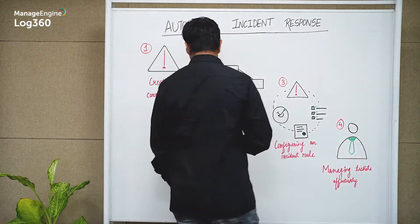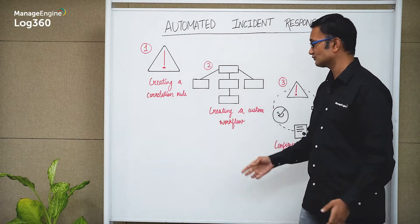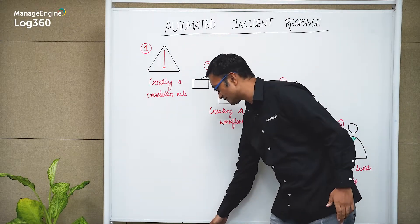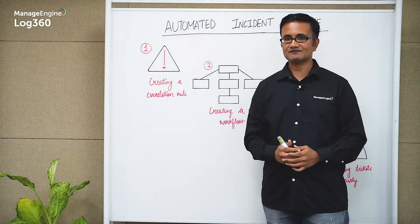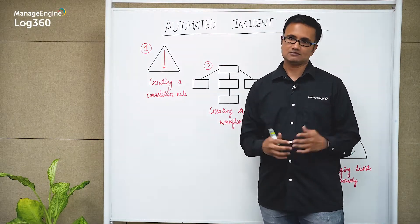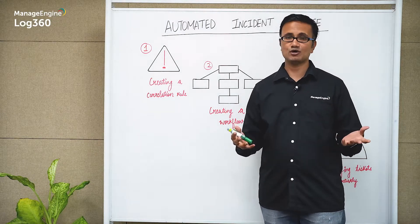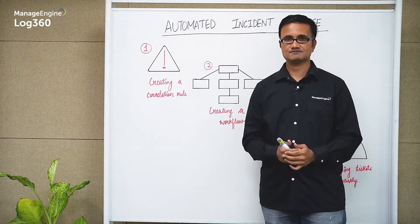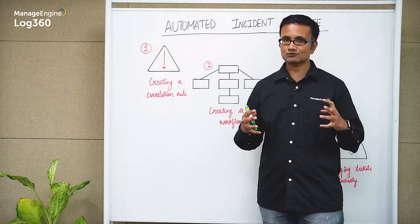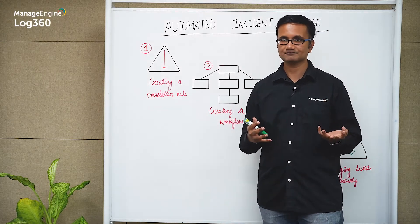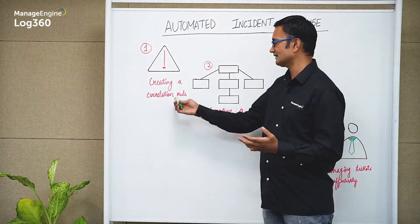As you can see here, an automated incident response mechanism is going to help you create a correlation rule. There could be several different events happening in a network, and all of these events, if taken in an isolated fashion, may or may not be malicious. But if you put all of these events together, that could be indicative of a malicious pattern. That is what we are trying to look at when creating a correlation rule.